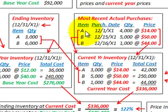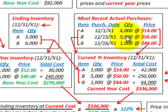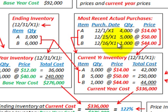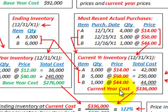For Item A, we had a purchase on 12/1/X1 of 4,000 units at the current price of $14 per unit. For Item B, we had two purchases: one on 12/1/X1 of 5,000 units at $50 per unit, and another purchase of 1,000 units at $44 per unit. These represent our most recent prices for calculating ending inventory at current year cost.